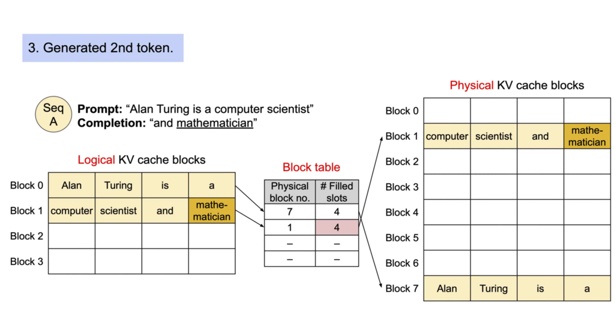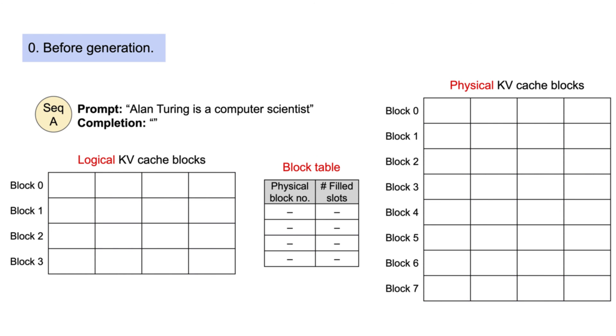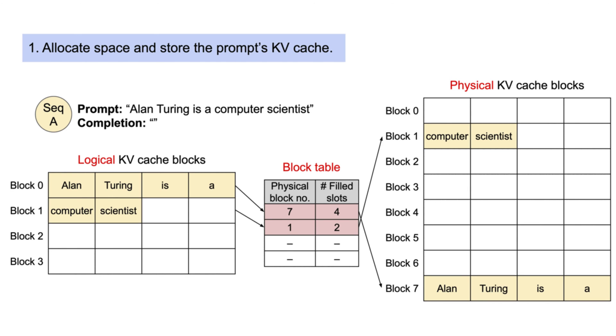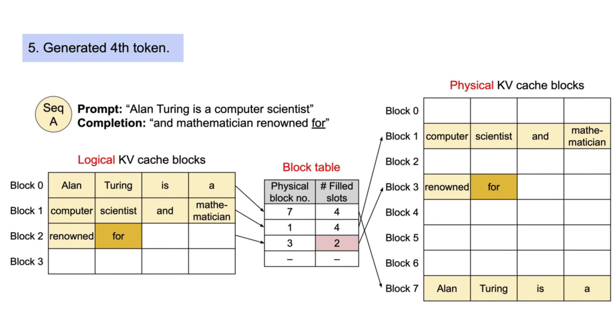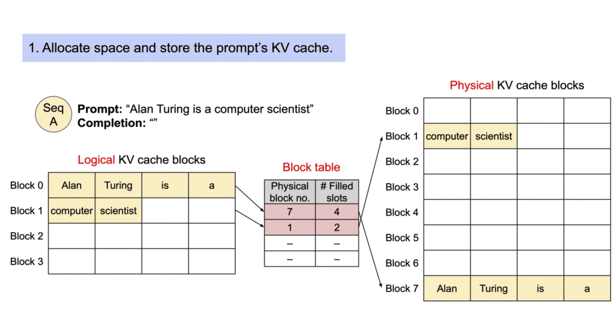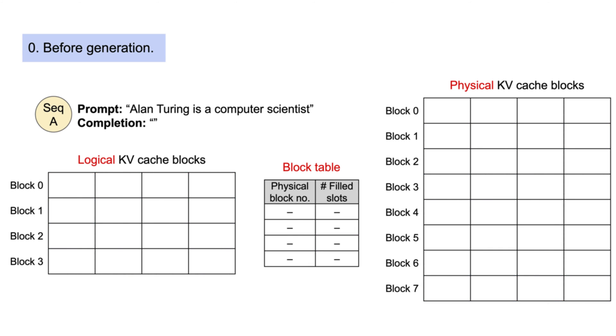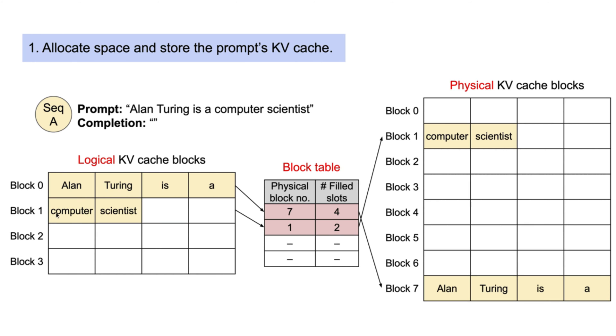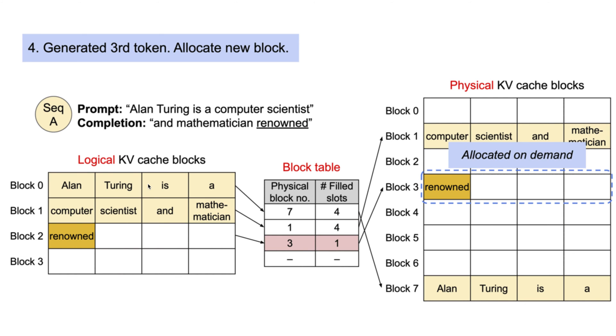Let's take this example demonstrating how vLLM executes page attention and manages memory during the decoding process of a single input sequence. In OS virtual memory, vLLM does not require reserving memory for the maximum possible generated sequence initially - that was 2048. Instead, it reserves only the necessary KV blocks to accommodate the KV cache generated during prompt computation. In this case, the prompt has seven tokens. vLLM maps the first two logical KV blocks zero and one to two physical KV blocks zero and seven respectively. In the pre-fill step, vLLM generates the KV cache of the prompts and first output token with a conventional self-attention algorithm.